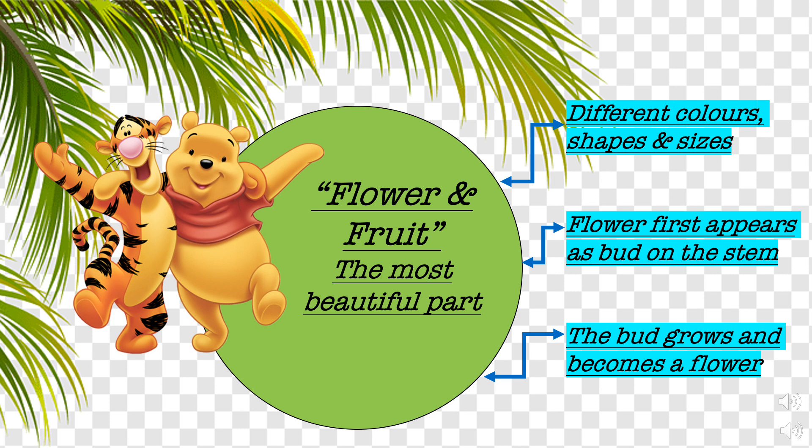A flower first appears as a bud on the stem, and that bud grows and becomes a flower. And children, one of the most amazing gifts of nature to all of us is fruit — it's so yummy! We can see a variety of fruits around us, and these are very healthy too.